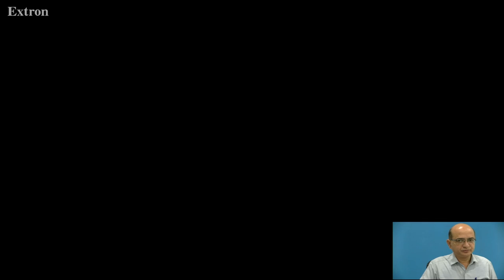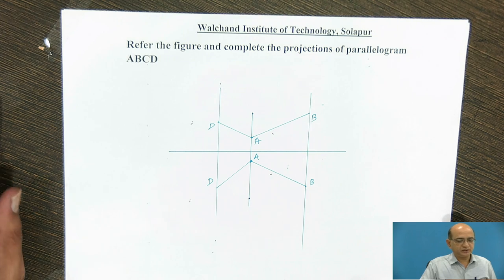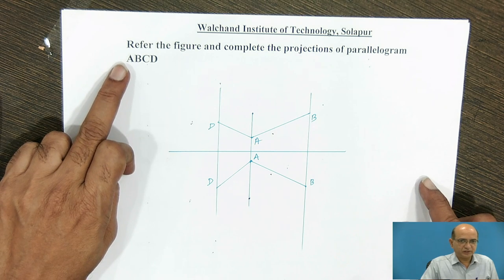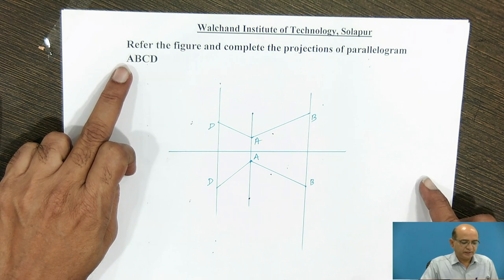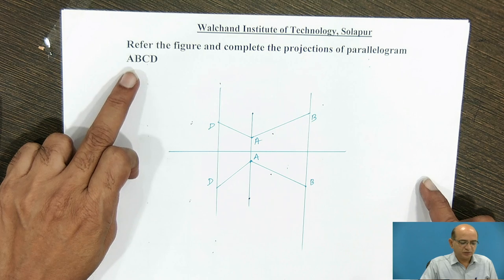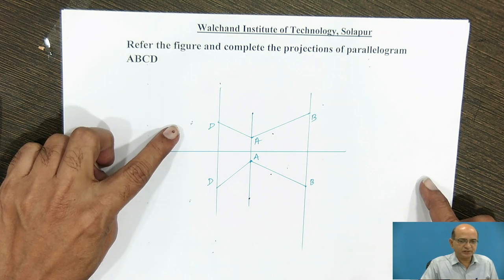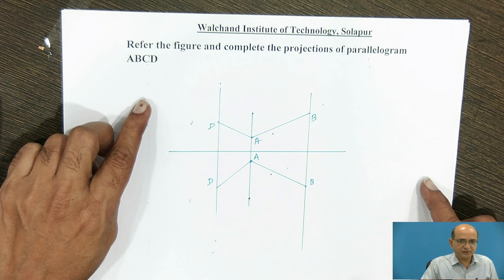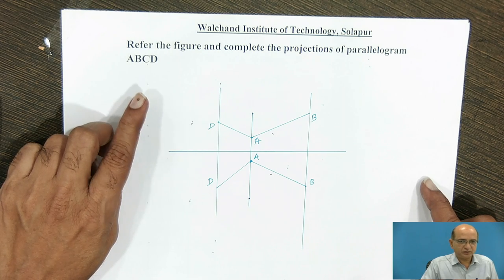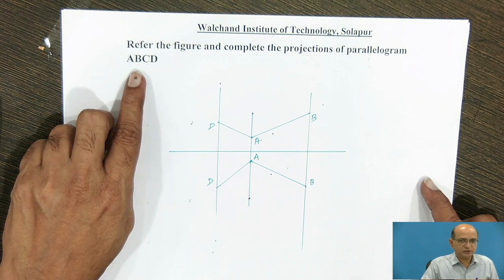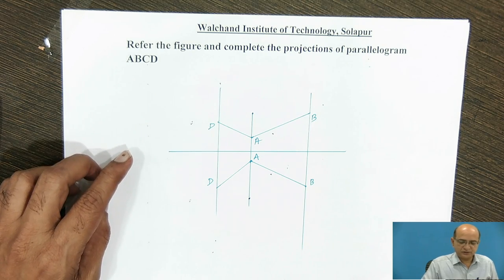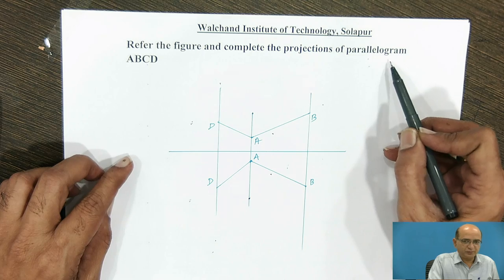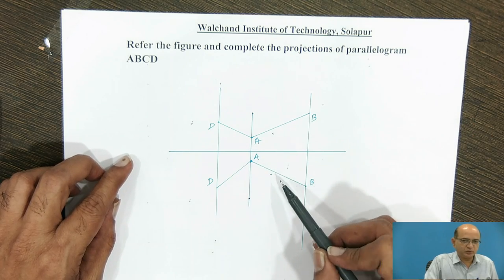Here we will take the question in which we have to refer to the given figure and complete the projections for the plane. The plane given in the figure is a parallelogram with corner positions A, B, C, D, and for this parallelogram we have to complete its projections when two lines are given to us.